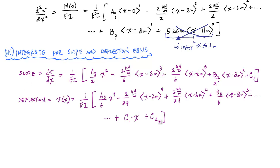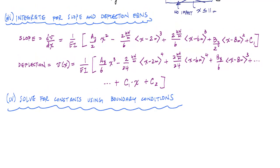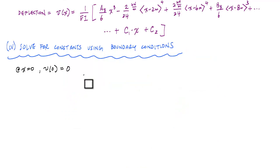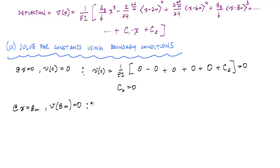Now we solve for the constants using boundary conditions from the support conditions. At x equals 0, deflection v equals 0; at x equals 8 meters, deflection v equals 0. Applying the first boundary condition: v(0) equals 1 over EI times zero — all singularity functions are inactive at x equals 0 — plus C2 equals 0, so C2 equals 0. The second boundary condition is that deflection at x equals 8 meters equals zero because of the roller support.